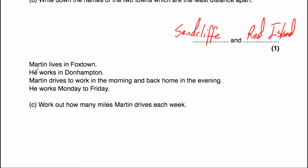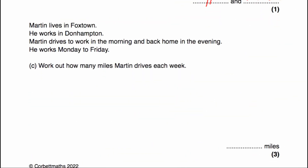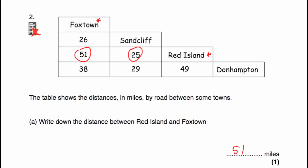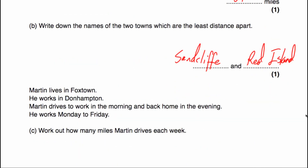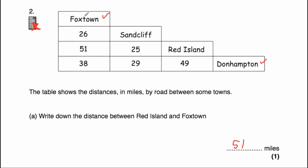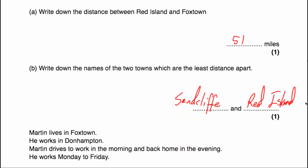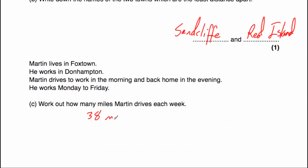Now we've got some information. Martin lives in Foxtown and he works in Donhampton. He drives to work in the morning and back home in the evening, and he works Monday to Friday. Work out how many miles Martin drives each week to work. We have our chart and Foxtown to Donhampton — if he travels from home to work, it will take him 38 miles. So each journey is 38 miles.